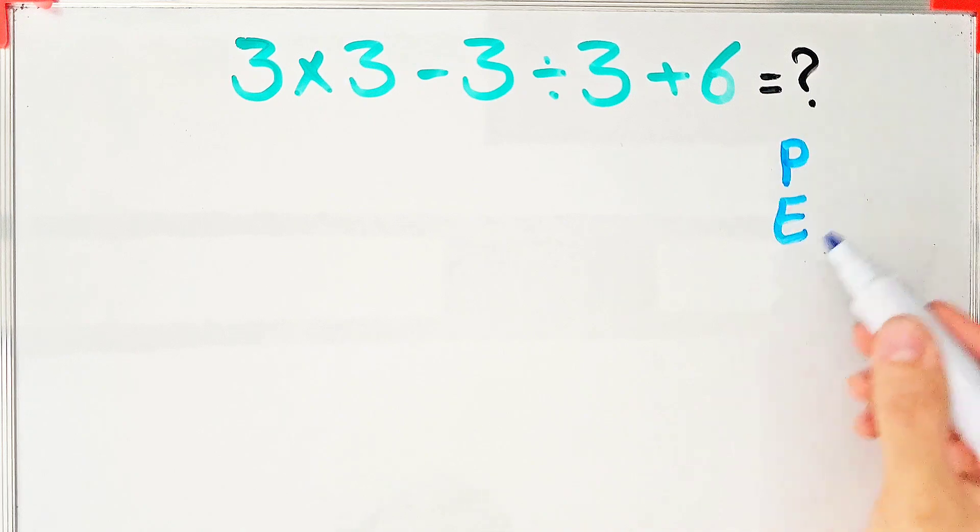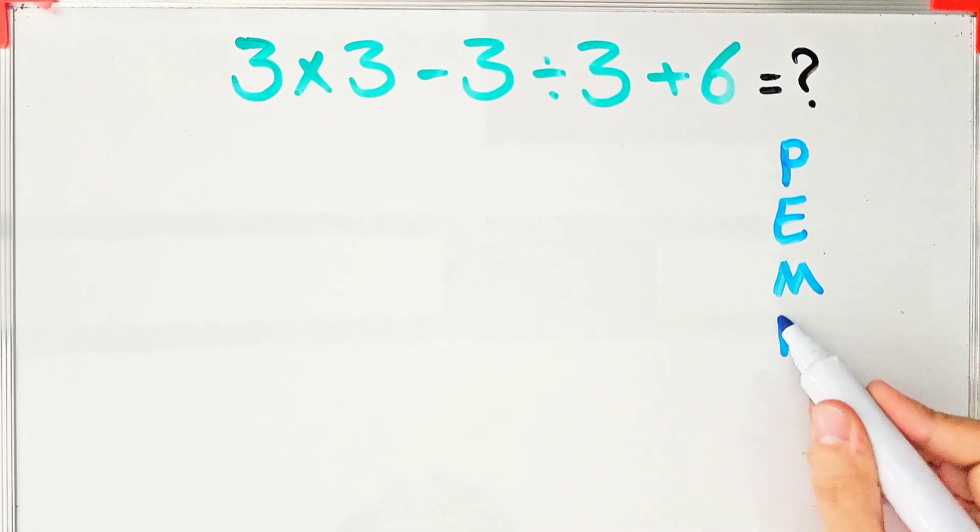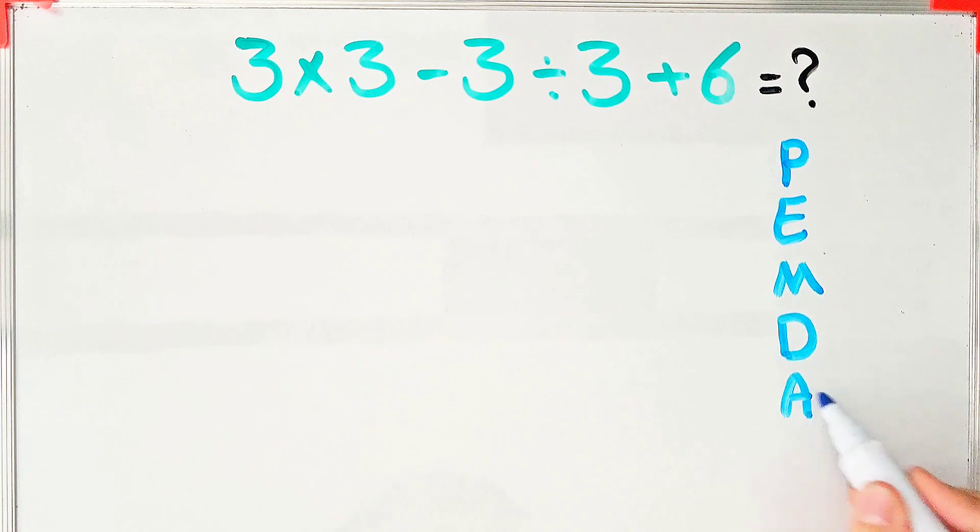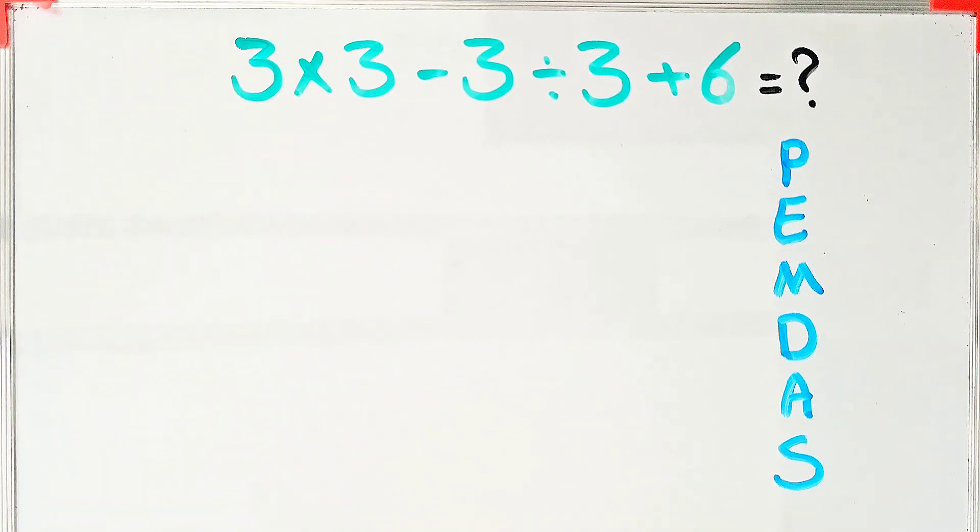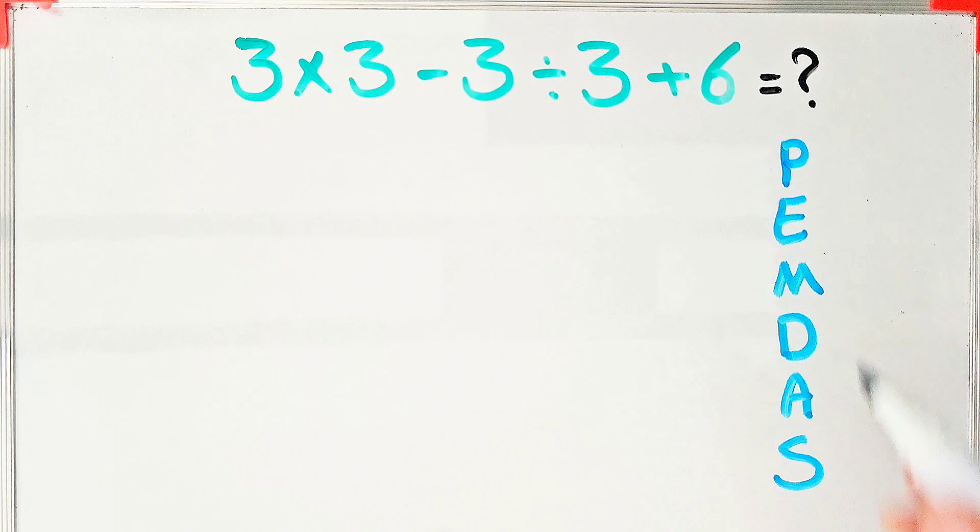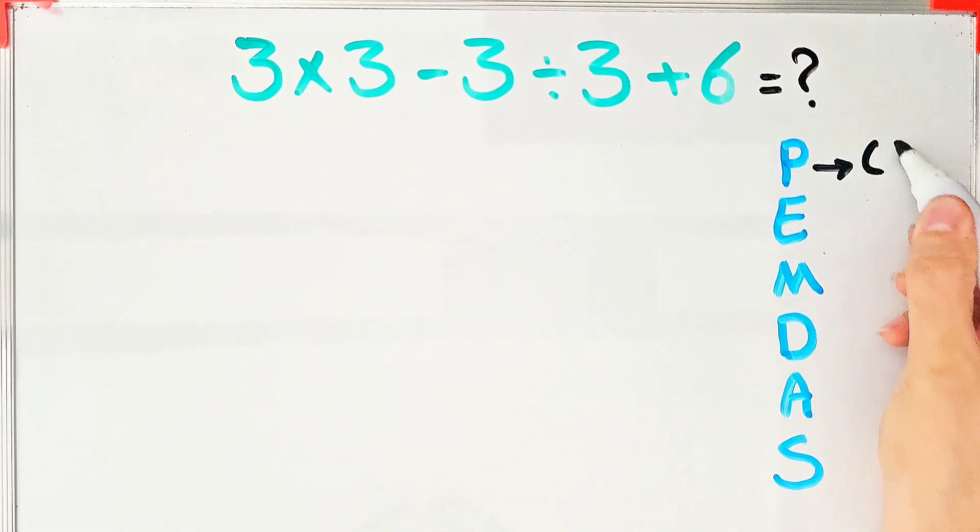question, we need to follow the order of operations which is PEMDAS that shows the priority of the mathematical operations. If you don't pay attention to this rule, you get the wrong answer. In this rule, P stands for parentheses...